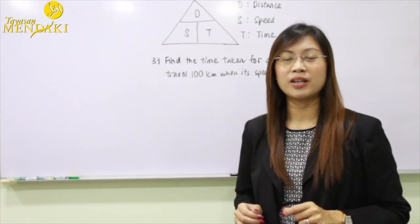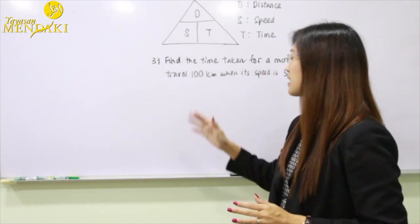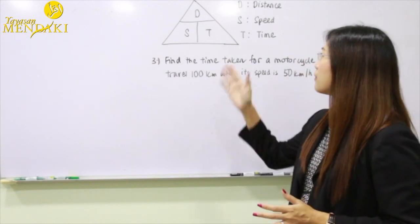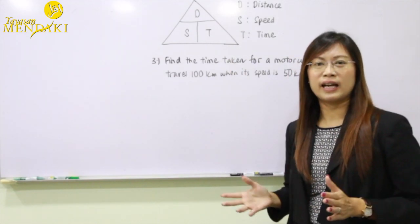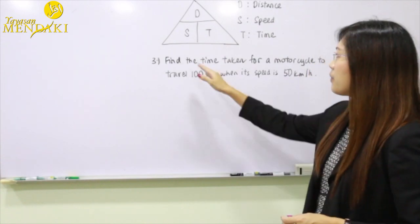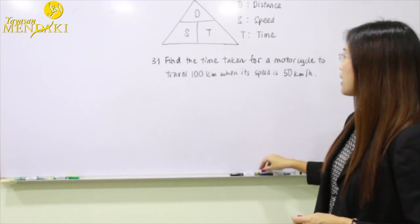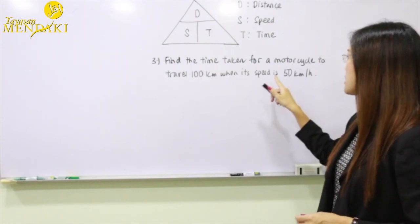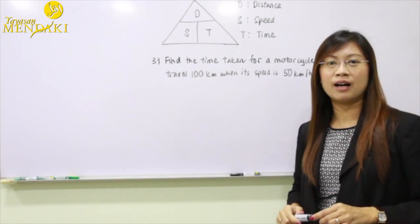Lastly, let's look at question three to see how we find the time taken by applying the formula. Question three: find the time taken for a motorcycle to travel 100 km when its speed is 50 km per hour.